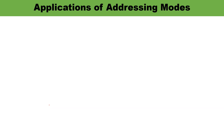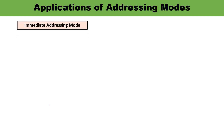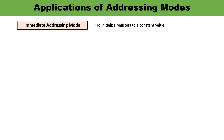Now let us talk about the applications of addressing modes. First, immediate addressing mode. Immediate addressing mode is used to initialize registers to a constant value. You must remember that in the case of immediate addressing mode, the operand is specified in the instruction itself.